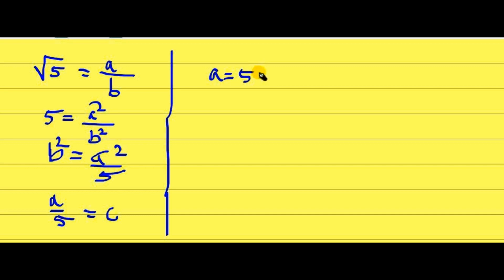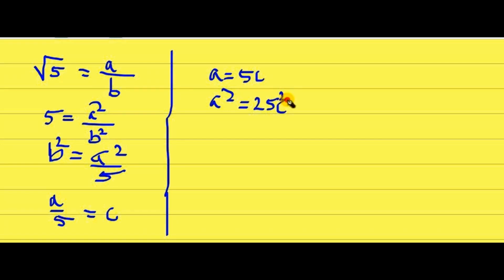Now square a = 5c again. So what you will get? A² is equal to 25c². Now put this value of a² into the equation 5b² = a². You will get 5b² equals to 25c².